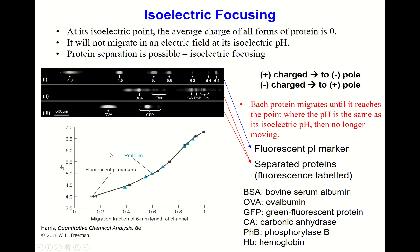This figure shows how proteins are separated. The y-axis is pH and the x-axis is migration fraction over a six-millimeter channel length. Depending on their isoelectric points, proteins can be well separated.